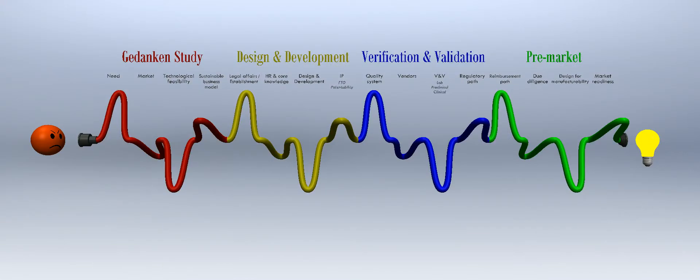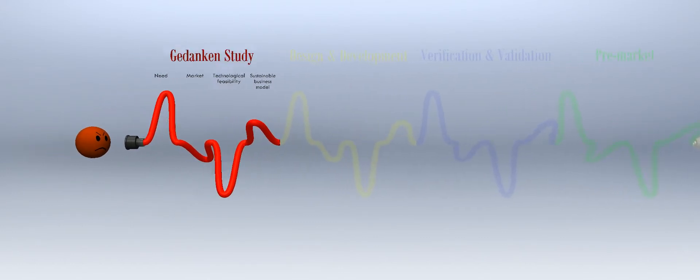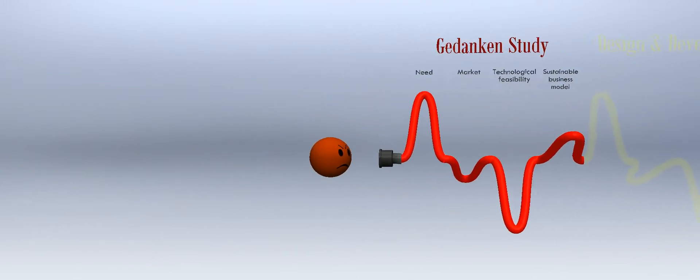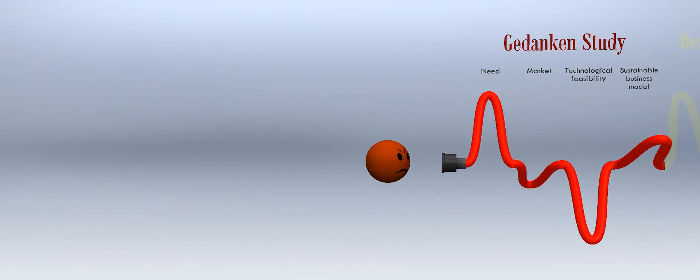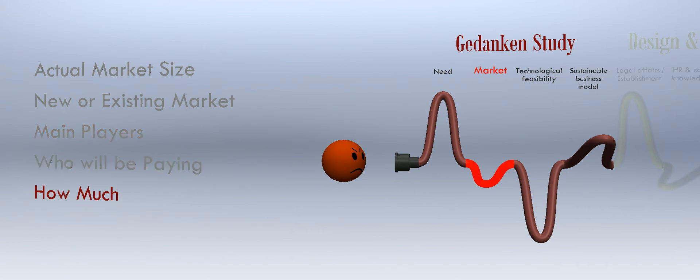The key to increasing the likelihood of overcoming the above constraints is proper mitigation of the gedanken study risk group. In this early and most important stage, fundamental questions should be deeply considered and addressed. Fundamental questions relating to the need risk may include: what is the medical need? Who is the product's end user? Occasionally, the need risk repeatedly changes as the medical problem is better understood. Fundamental questions relating to the market risk may include: what is the actual market size? Is it a new or existing market? Who are the main players in the market? Who will be paying for the product? And how much are they willing to pay?